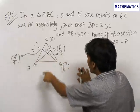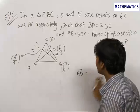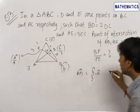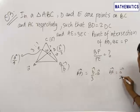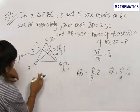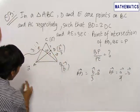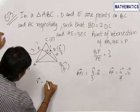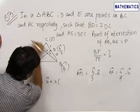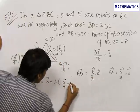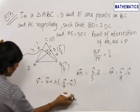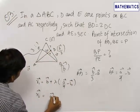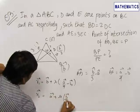Now let us find AD vector and BE vector. AD vector can be written as vector B upon 3 minus vector A. Similarly, the direction vector for BE can be written as vector A upon 4 minus vector B. Now let us write the equations of lines AD and BE to find the point of intersection. The vector equation of line BE can be written as R vector equals position vector of B plus lambda times (vector A upon 4 minus vector B).